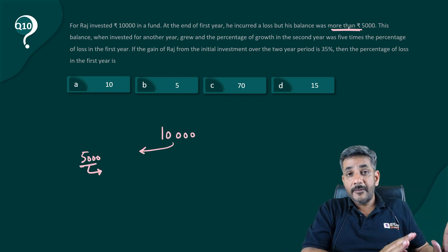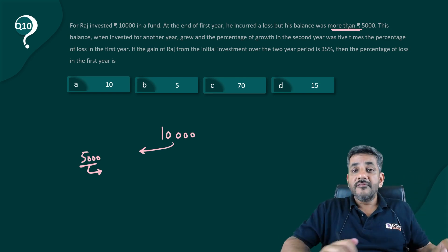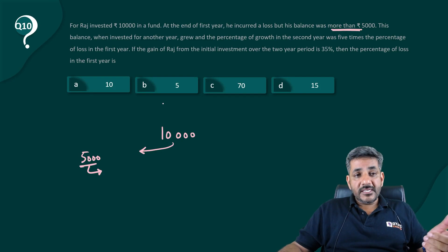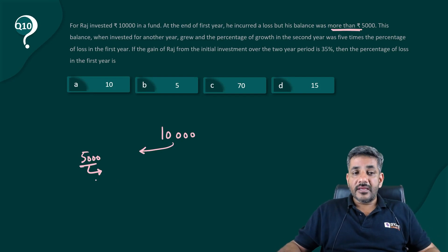Which means the loss was not more than 50%, right? The loss was not more than 50 percent. This balance, when invested for another year, it grew. So from this amount, whatever that amount is above 5000, I don't know what it is but it further grew.